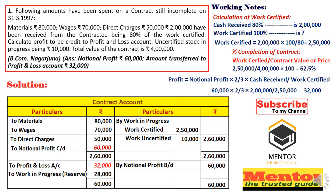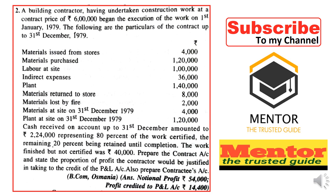Next question: contract undertaken for construction work at a contract price of six lakhs, beginning January 1st 1979, with particulars up to 31st December 1979 including material purchases, labor, indirect expenses, plant, material returned to store, material lost by fire, closing plant; cash received of 2,24,000 being 80% of work certified; uncertified work of 40,000. We need to prepare the contract account and calculate proportionate profit.